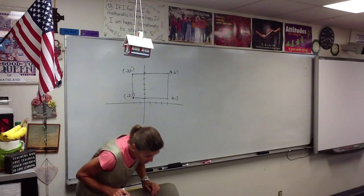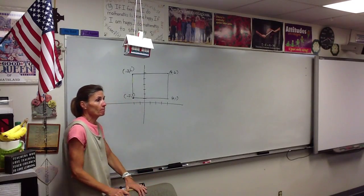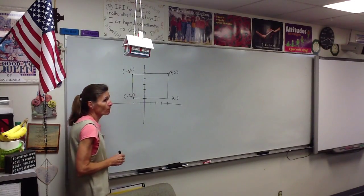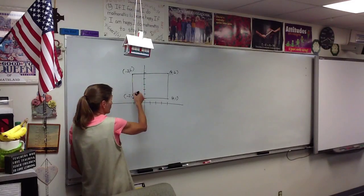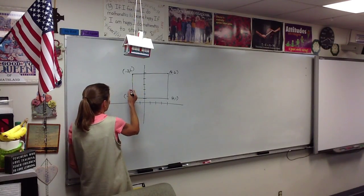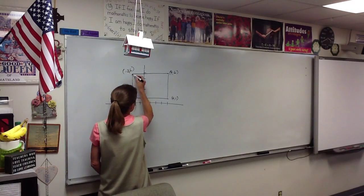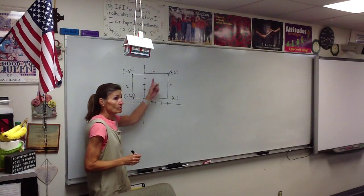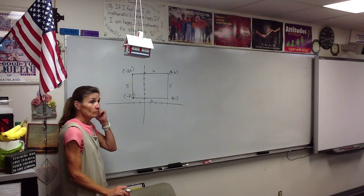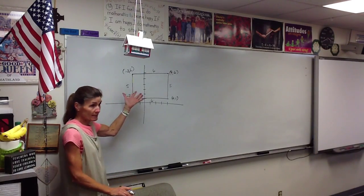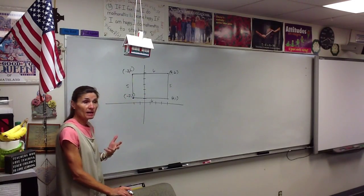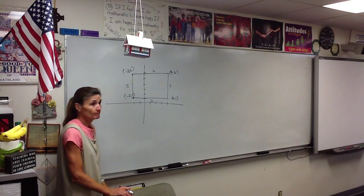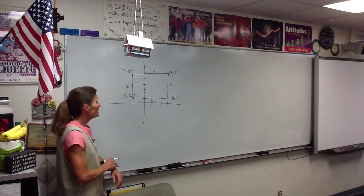So what am I supposed to be doing? Finding the area and the perimeter. These two I can use the distance formula, but I really don't need it because these two are on a vertical line. How far is it from 1 to 6? Five. How far is it from negative 2 to 4? So this thing has a perimeter of 22. Now what's its area? Well, it's a rectangle — base times height, or length times width.